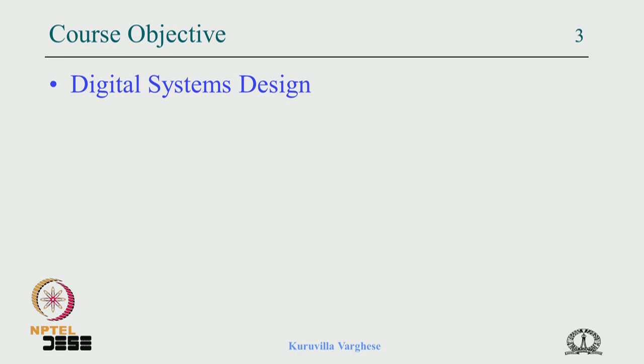The main course objective is digital system design. The main focus is: given a specification of a system, how do you go about implementing it? The system could be a small system like a counter or an arithmetic logic unit, or it could be a microprocessor or a complex system-on-chip. Given the specification and domain knowledge, how do you go about implementing it — that is the first objective.